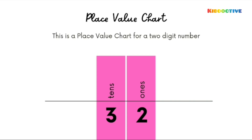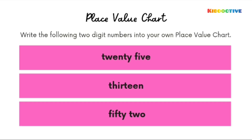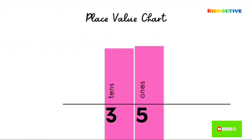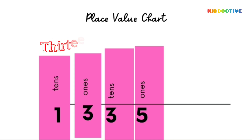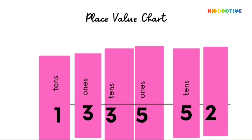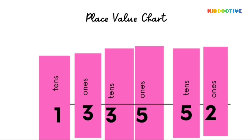Now, place value chart. How do we define the place for each digit? Here is the place value chart. You are going to tell me where to place 25, 13, and 52. For those who don't know how to place, we will do it together. See: 35 has 3 tens and 5 ones. 13 has 1 ten and 3 ones. 52 has 5 tens and 2 ones. Understood? In this way, you place numbers in the chart.